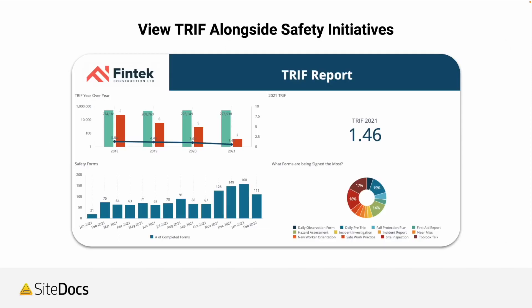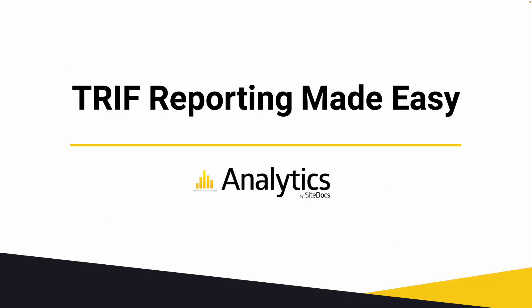Once you've entered in all the data of incidents and the hours worked, you'll be able to have incredible dashboards in analytics. Not only will you have something beautiful to share with executives or management, but you'll also be able to see how your TRIR compares alongside safety initiatives that you're doing. Being able to show workers participating more with safety forms and then their TRIR descending is a powerful way to show that what you're doing is working. With SiteDocs and SiteDocs analytics, you'll have an easy way to enter your data and the best possible way to view and evaluate your TRIR rating as it relates to the safety initiatives you're doing. And that is how SiteDocs helps make TRIR reporting quick, easy, and effective.